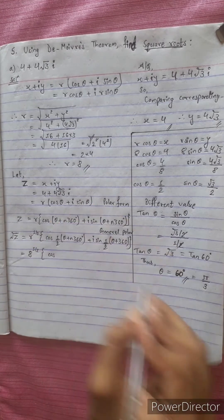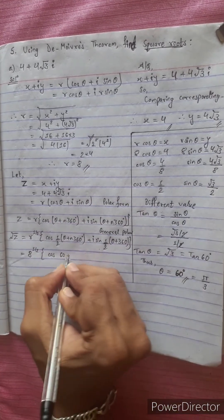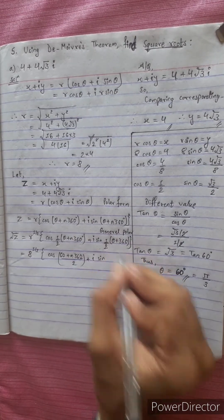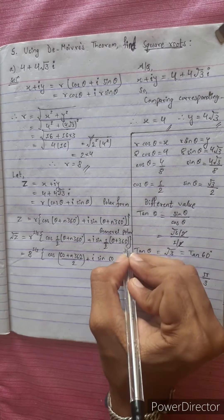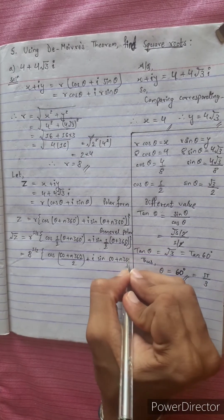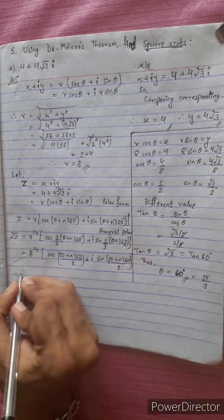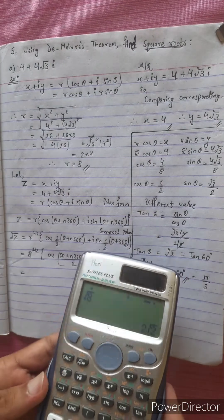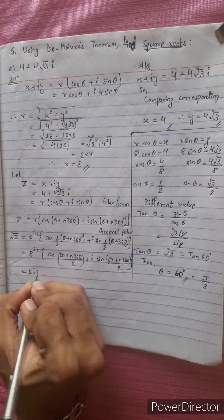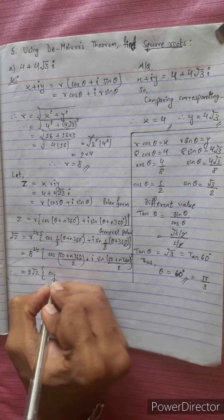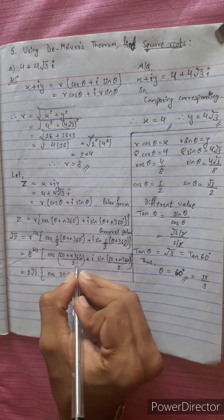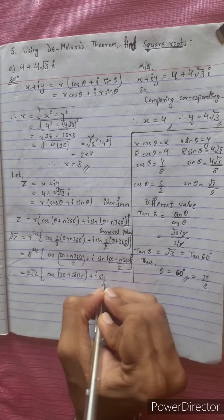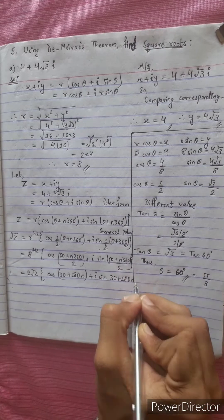The theta value is 60 degrees. So we get 2 root 2 times cos(60 divided by 2 plus 180n) plus i sin(30 plus 180n). This gives 2 root 2 cos(30 plus 180n) plus i sin(30 plus 180n).